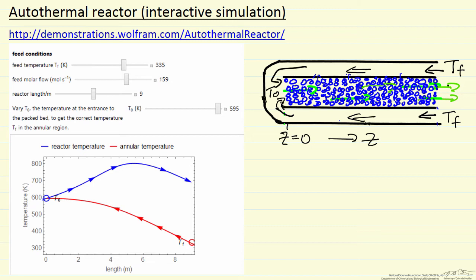This is the feed temperature of the gas coming into the reactor. The gas moves through the annular region, and then at this point, the gas heats up because this is an exothermic reaction. It enters at Tf and is at a temperature T0.